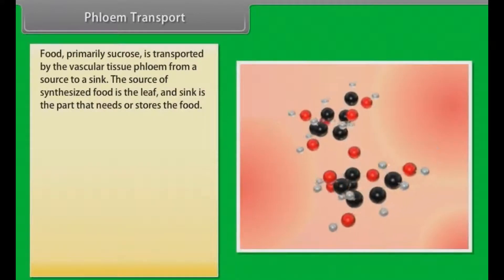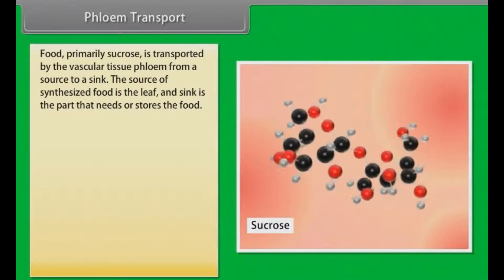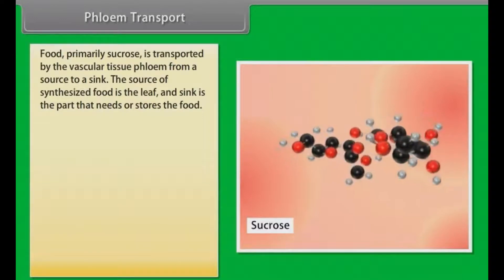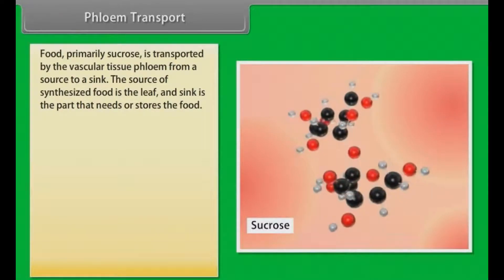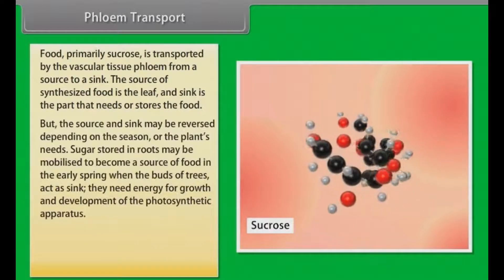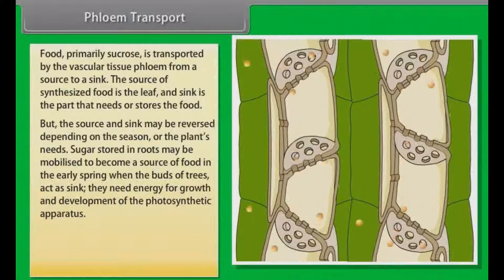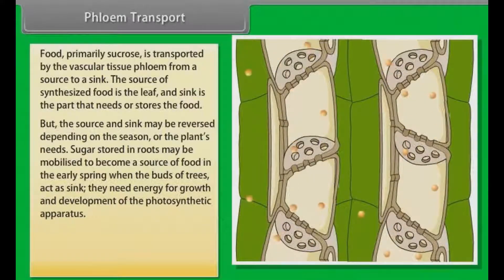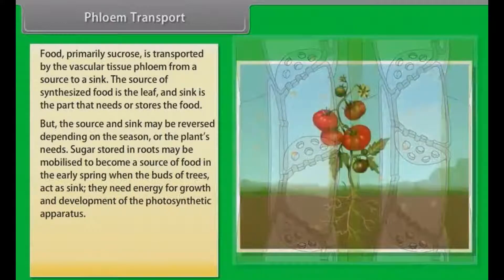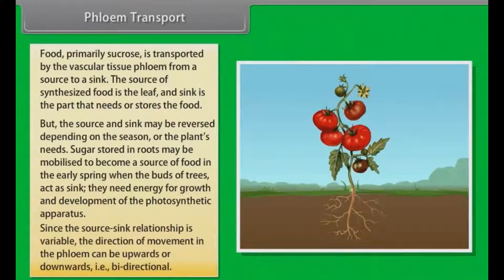Phloem transport. Food, primarily sucrose, is transported by the vascular tissue phloem from a source to a sink. Usually the source is that part of the plant which synthesizes the food. The source and sink may be reversed depending on the season or the plant's needs. Sugar stored in roots may be mobilized to become a source of food in the early spring, when the buds of trees act as sinks and need energy for growth and development of the photosynthetic apparatus. Since the source-sink relationship is variable, the direction of movement in the phloem can be upwards or downwards, which means bi-directional.